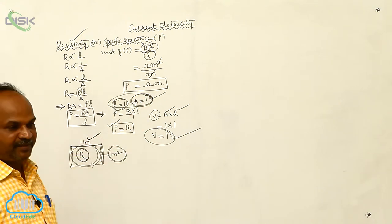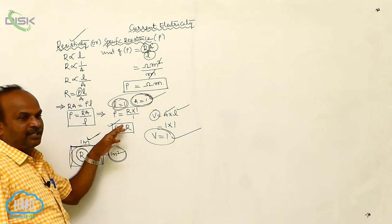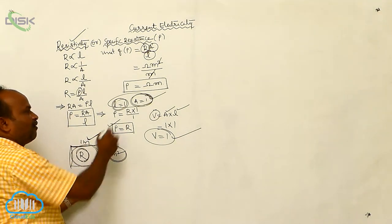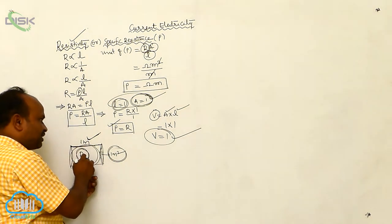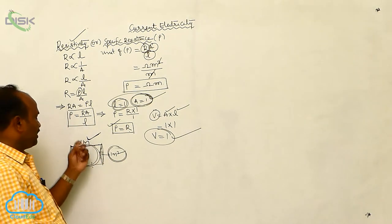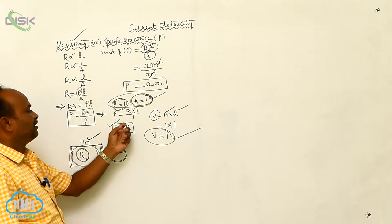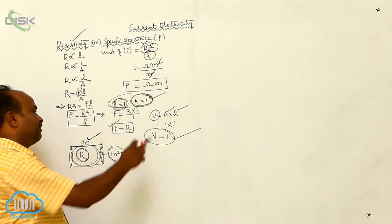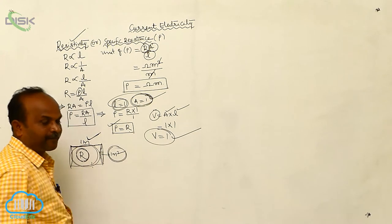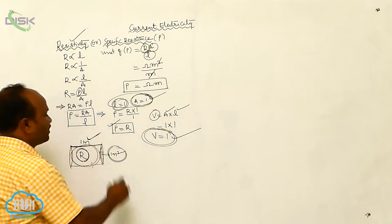It is also known as specific resistance. From the given formula, if L equals 1 and A equals 1, then rho equals R. First definition: the resistance of a conductor of unit length and unit cross-sectional area is called resistivity. Second definition: if A equals 1 and L equals 1, then volume is also equals to 1, so the resistance of a conductor of unit volume is also known as resistivity. The unit of resistivity is Ohm into meter.